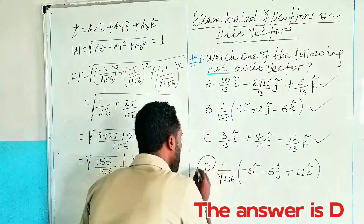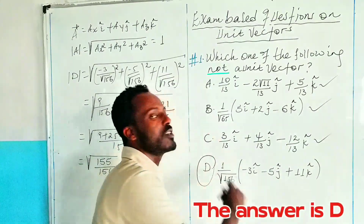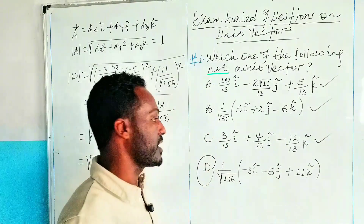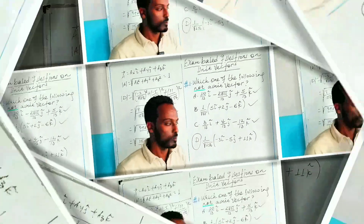So the answer is D — vector D is not a unit vector. This is all the time we have for today. Thank you very much.